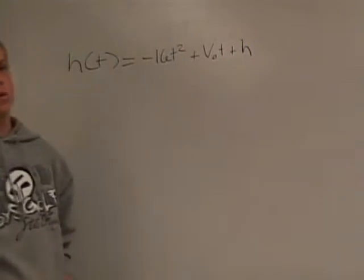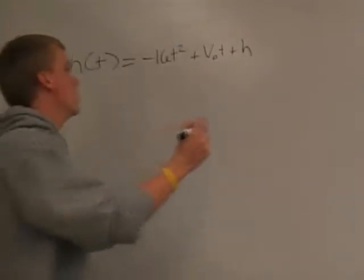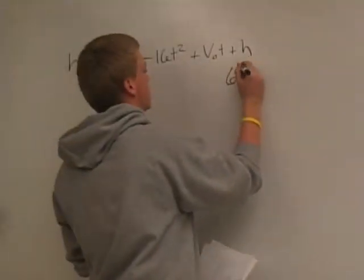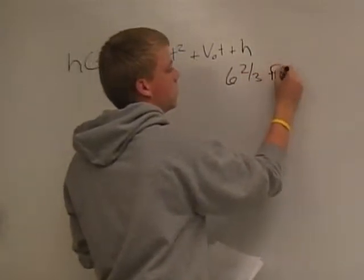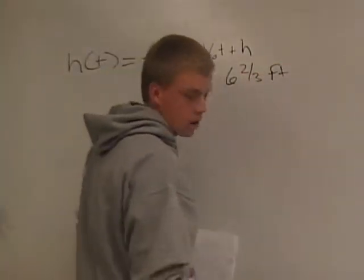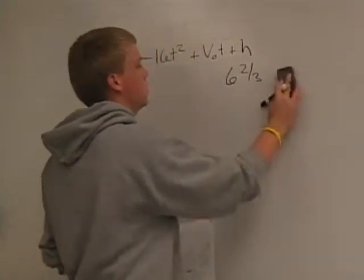So for the height, which in other words is our y-intercept, where Dan released the ball, we are going to put 6 and 2/3 feet because that is how far from the ground the release point of the ball was.